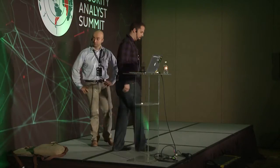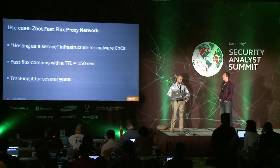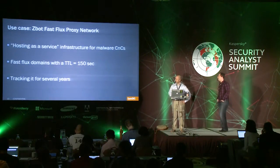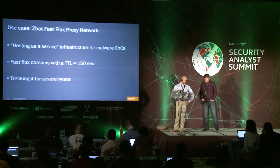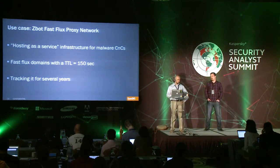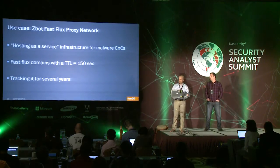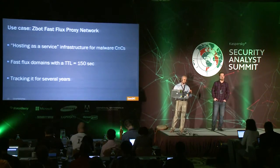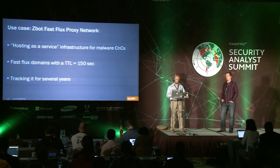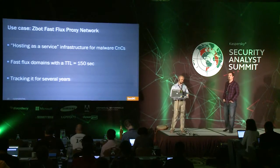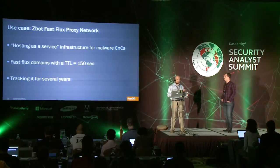The first way we use this data is looking at domain-IP associations and monitoring them over time. We're taking the Zbot FastFlux proxy network as an example — a hosting-as-a-service infrastructure used to host malware C&Cs. You recognize it by looking at FastFlux domains with a TTL of 150 seconds.